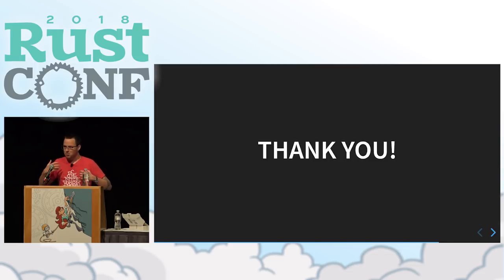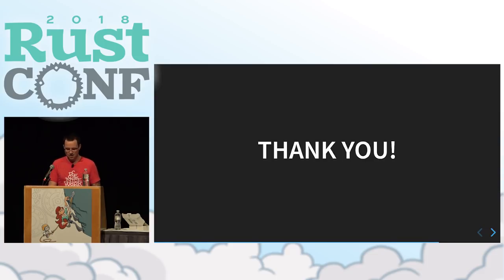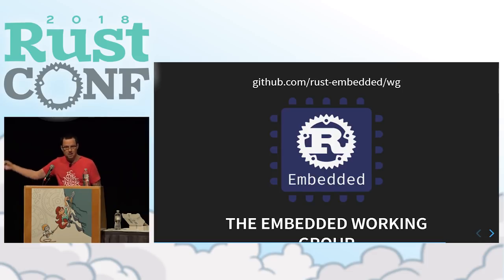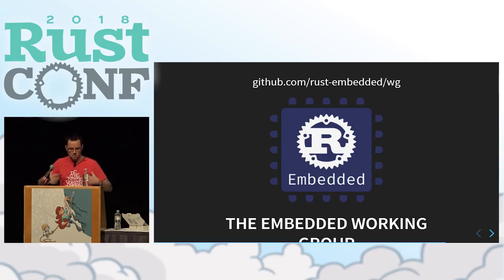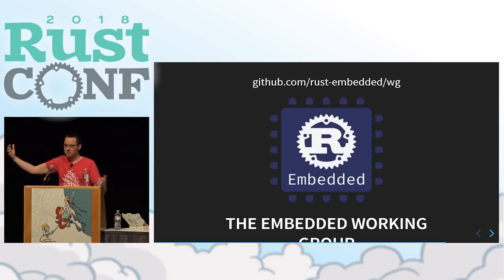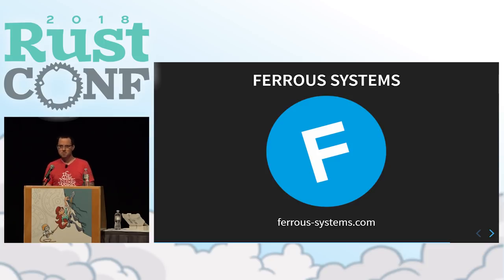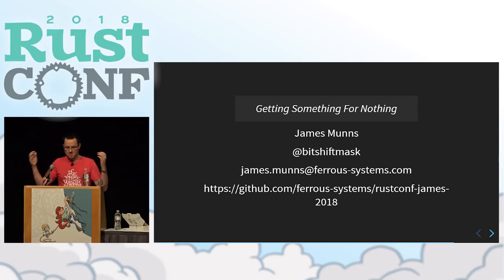Thank you very much. For embedded systems developers, I hope you're really excited to write Rust now. For those who've never worked with embedded systems, I hope this feels way more accessible. I'm part of the embedded working group — we're part of the Rust team, trying to make things as usable and scalable as possible for embedded systems. Come check us out on GitHub — that's our coordination repository, and we'd love your help. I'm also founding a company with some others from the Rust community, including Katarina who's speaking later today, focused on low-level and embedded problems in Rust. If your company has those kinds of problems, come talk to us. I'm James Munns, and this was Getting Something for Nothing.